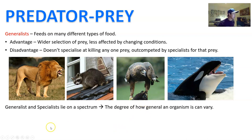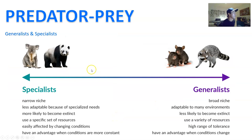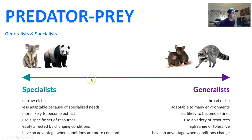When we think of generalists and specialists, it's better to think of them as a spectrum rather than categories. On one hand you have really extreme specialists with a very narrow niche and very specific adaptations — they are more likely to go extinct because they've adapted and relied on that particular food source. On the other hand, you have extreme generalists who have a really broad niche, and organisms can plot themselves anywhere in between on that spectrum.